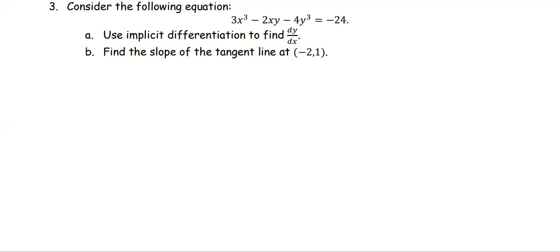In this example, consider the following equation: 3x³ minus 2xy minus 4y³ equals negative 24. We are going to use implicit differentiation to find dy/dx, and then in part b, we are going to find the slope of the tangent line at the point negative 2, 1.